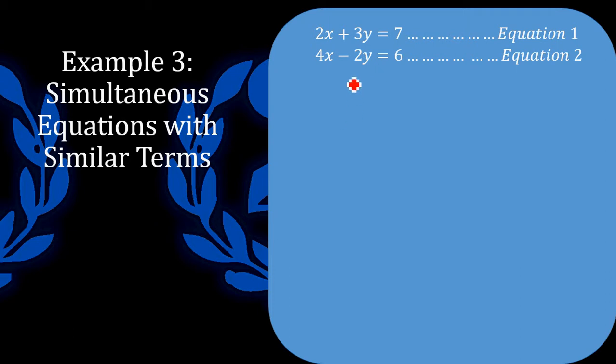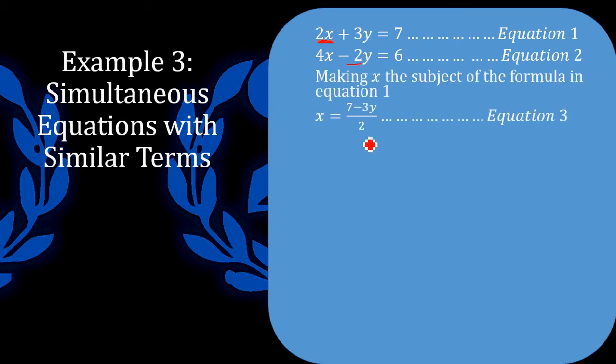I, however, due to my personal preference, would choose this value here and use x as the subject of the formula in equation 1 because I don't want to work with a negative coefficient. And since this one here is a positive coefficient that is small, I would use this one here to make x the subject of the formula. And I would end up with something looking like that.